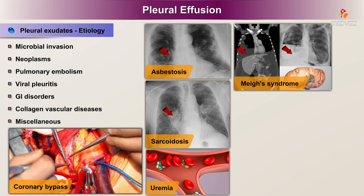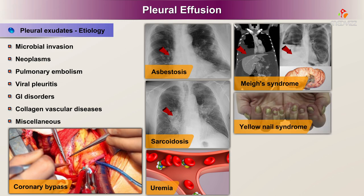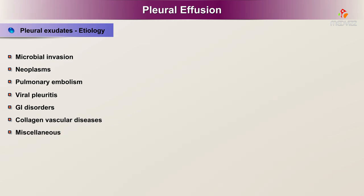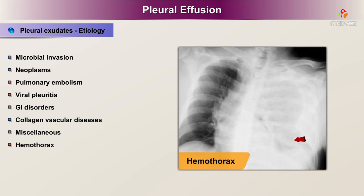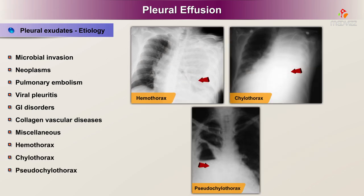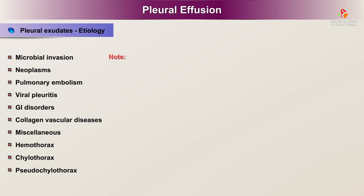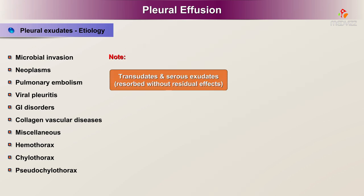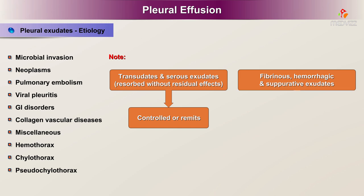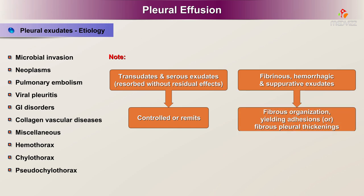Additional miscellaneous causes include uremia, Meigs syndrome, yellow nail syndrome, previous thoracic surgery, pancreatitis, hemothorax, chylothorax, and pseudochylothorax. Note that transudates and serous exudates are usually reabsorbed without residual effects if the inciting cause is controlled or remits. Fibrinous, hemorrhagic, and suppurative exudates lead to fibrous organization, yielding adhesions or fibrous pleural thickenings that sometimes undergo calcification.